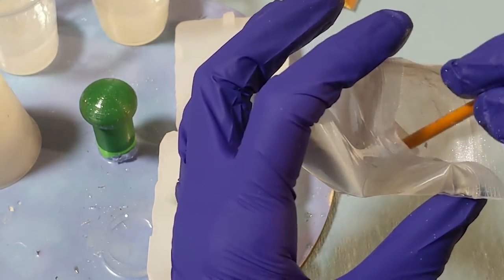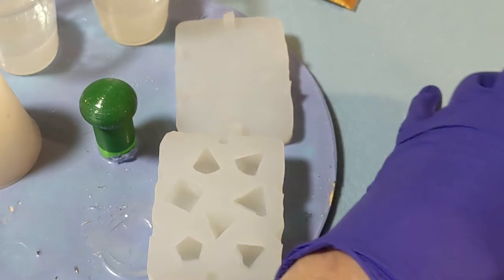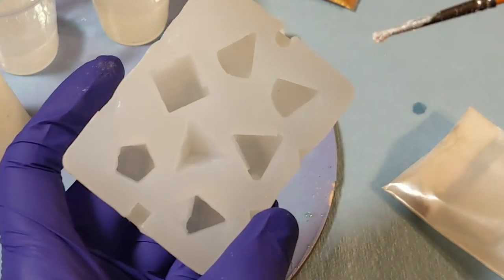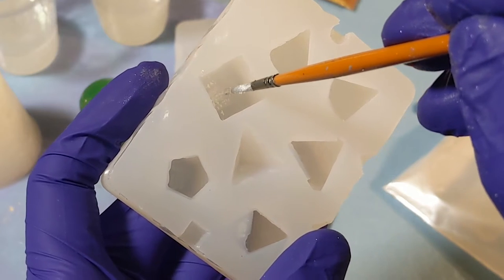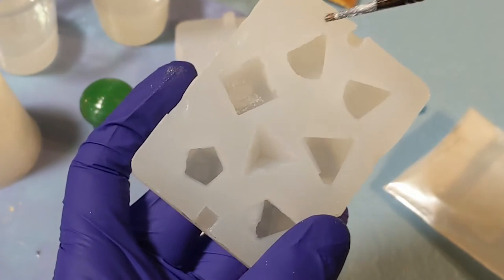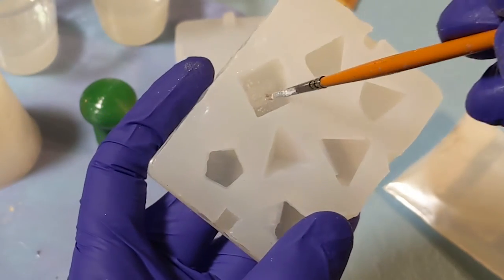It kind of leaves splotches and powder pockets everywhere, which you want to try to avoid. In hindsight, after doing it this way, I would recommend actually just dumping the powder in there and shaking the mold so that it gets an even layer all over the whole thing.